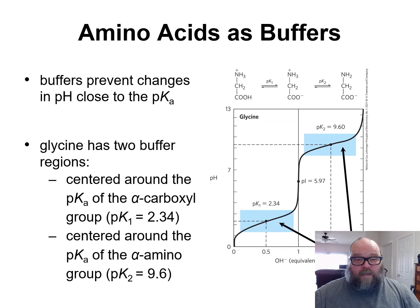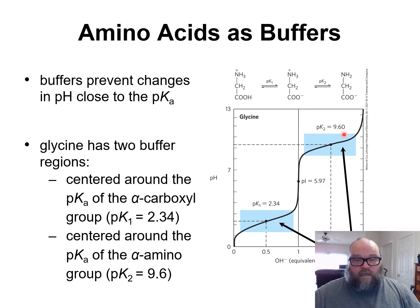The isoelectric point is the true midpoint between pK1 and pK2. How do you figure that out? It's easy — you add them together: 9.6 and 2.34, divide by 2, and you get 5.97.